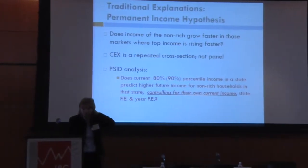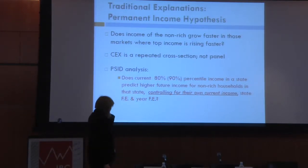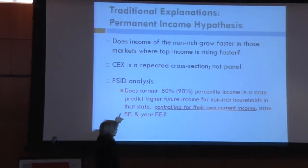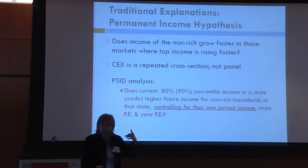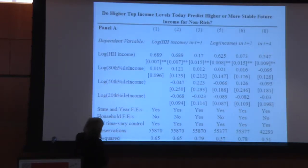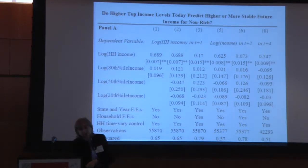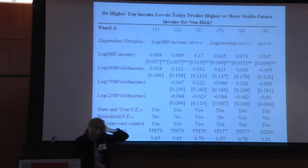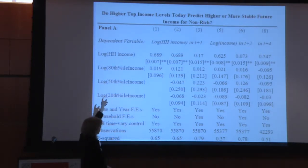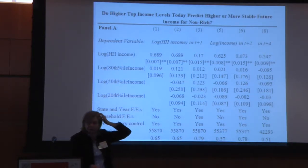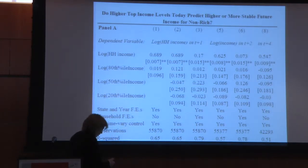In the PSID, we ask: does current rich income predict higher future non-rich income? We can control for the person's own income. The dependent variable is non-rich income at T+1, absorbing their income at T, and we see whether that loads on income of the rich — which it does not. We look at the second row for asterisks and basically find none. There's no relationship between the income of the rich in the state-year and the future income of the non-rich.